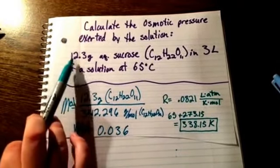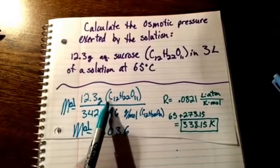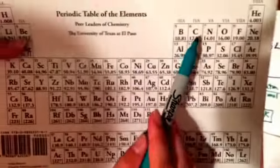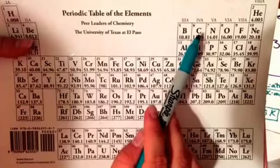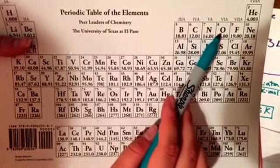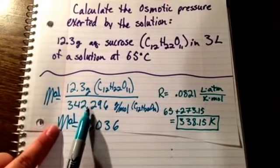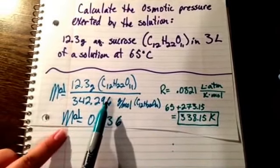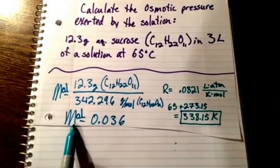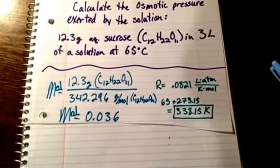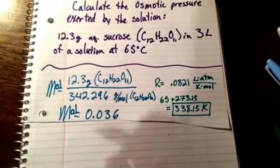We do that by putting our 12.3 grams of sucrose on top. And then on the bottom, we calculate the molar mass by adding up the 12 carbons, the 11 oxygens, and 22 hydrogens. That will give you 342.296. That means our moles, when you divide this, is 0.036. Now we can find our molarity.